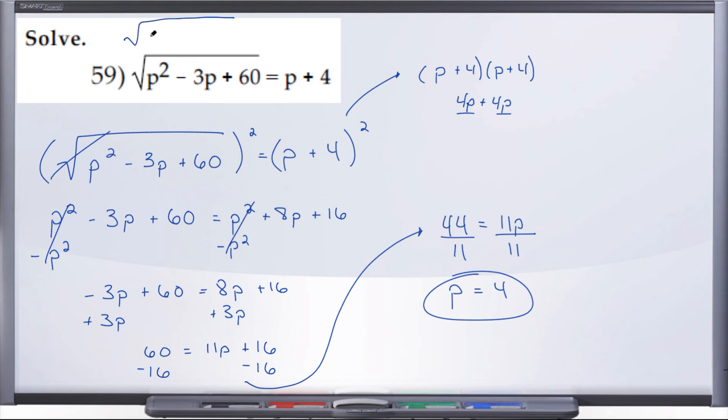We get 4 squared minus 3 times 4 plus 60 equals 4 plus 4, which is 8. Here we're going to end up with radical, well, 4 squared is 16 minus 12 plus 60 equals 8.